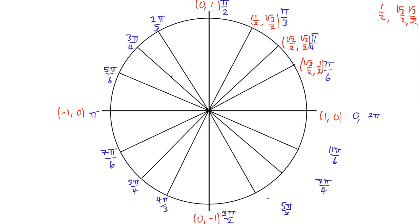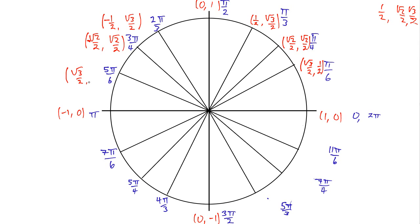What about the other quadrants? The x and y values are going to be the same magnitudes, but maybe negative instead of positive. At 2pi over 3, this point has the same basic form as pi over 3: x value is 1/2 and y value is square root of 3 over 2, but the x value is negative because we're in the second quadrant. For 3pi over 4, it's a pi over 4 point, so it's (square root of 2 over 2, square root of 2 over 2), but the x value is negative. And 5pi over 6 looks just like pi over 6 — (square root of 3 over 2, 1/2) — but again, the x value is negative.